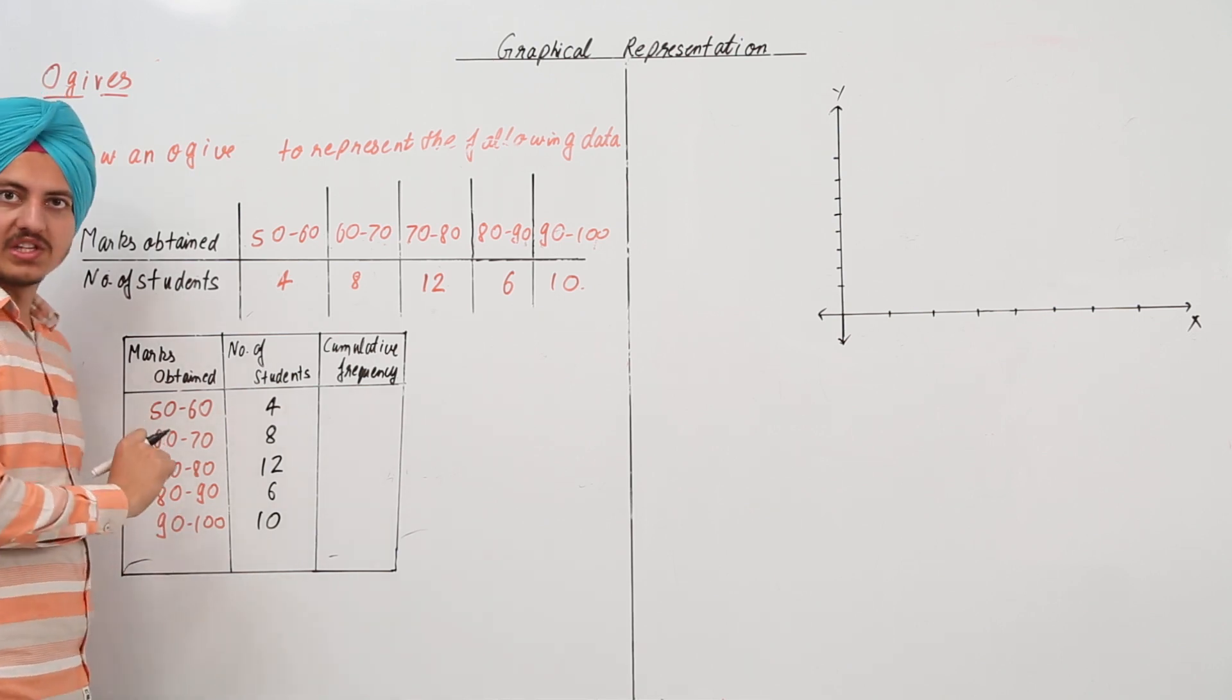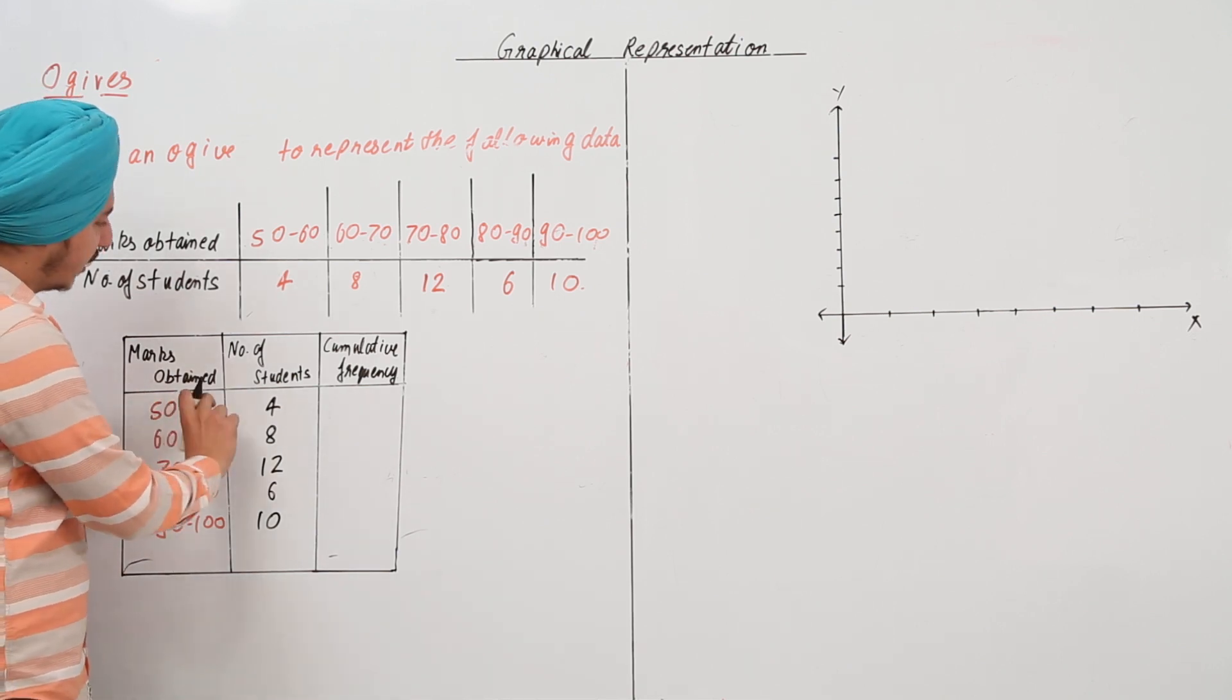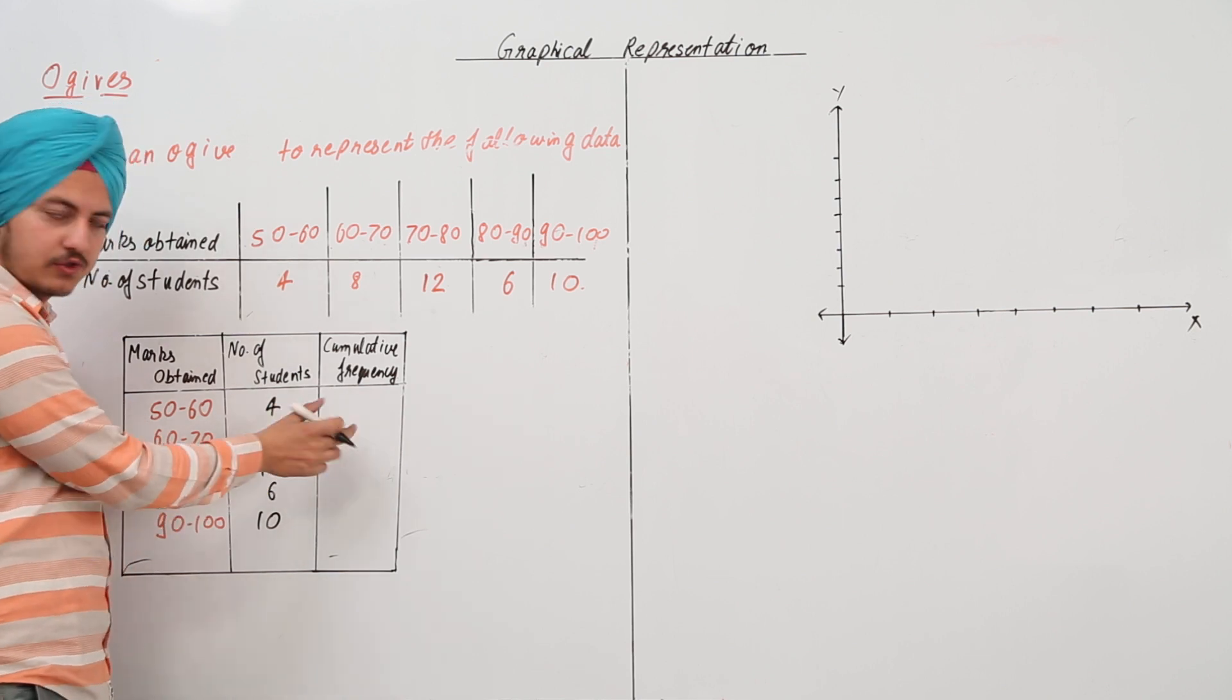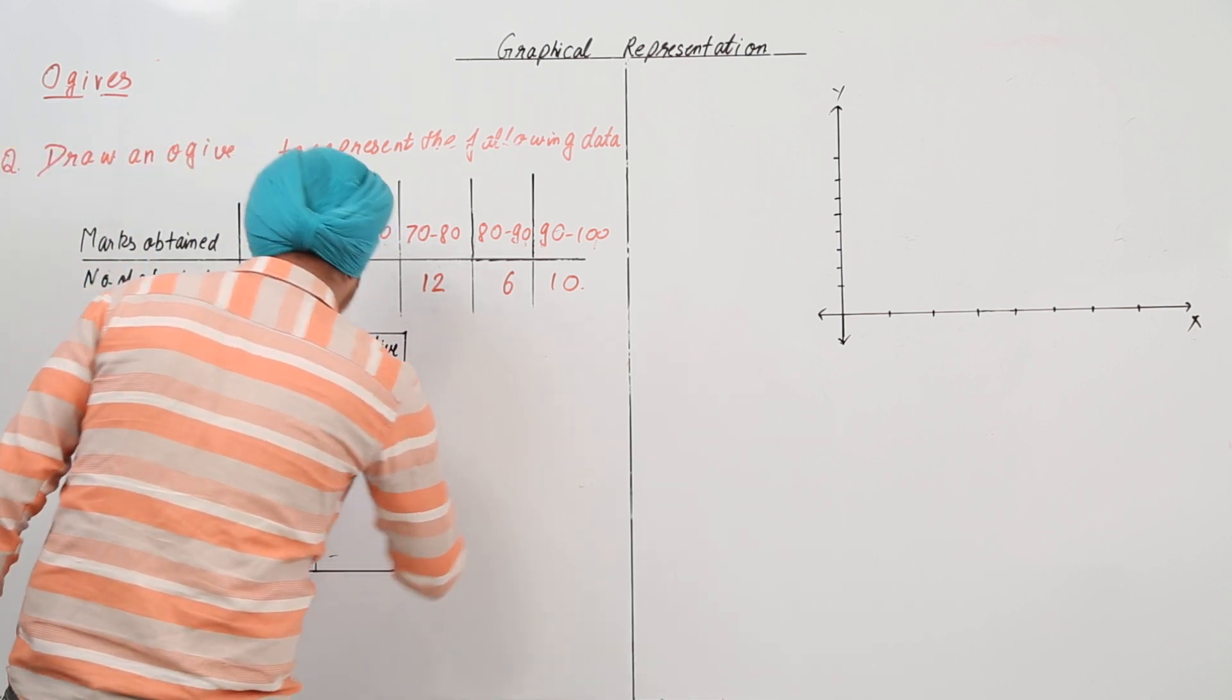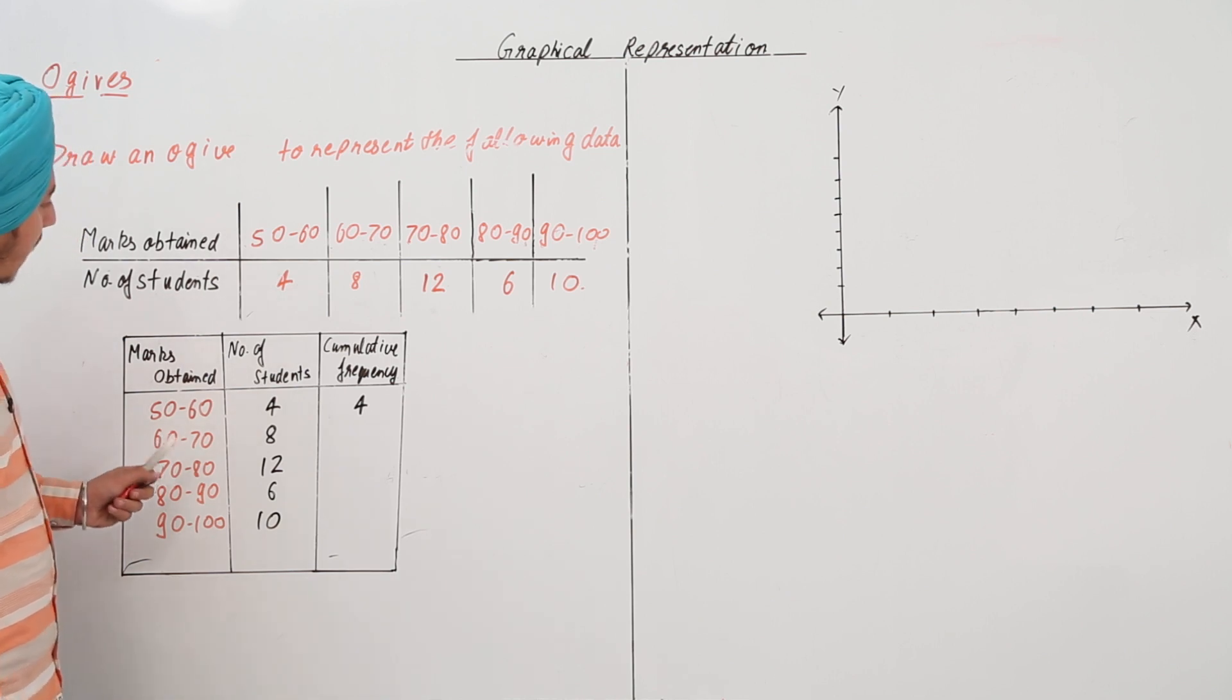So, cumulative frequencies mean that 50 to 60, the total number of students are 4. So, this comes right over here just like this.